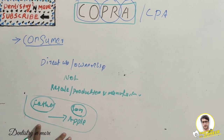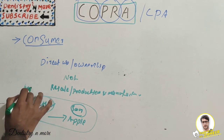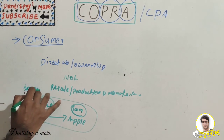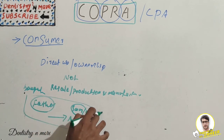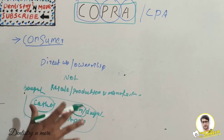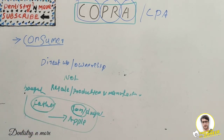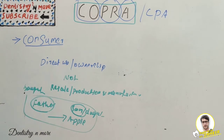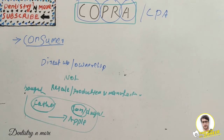To clarify further: the apple is bought by the father and consumed by the son or daughter. Both are consumers because they are using it for direct use or ownership, not for resale, production, or manufacturing.